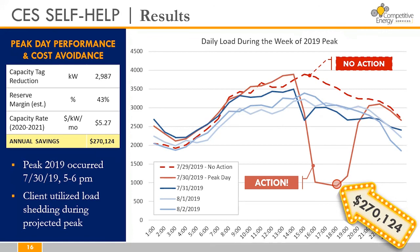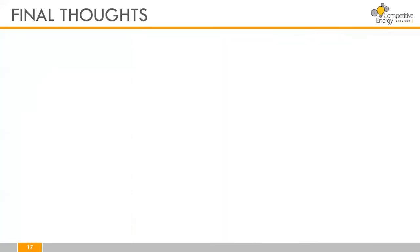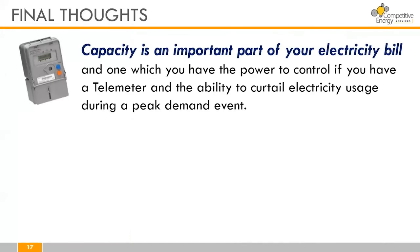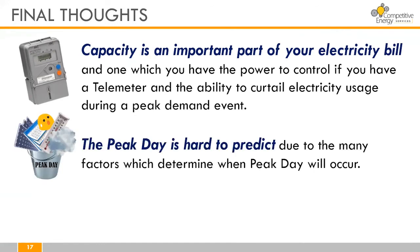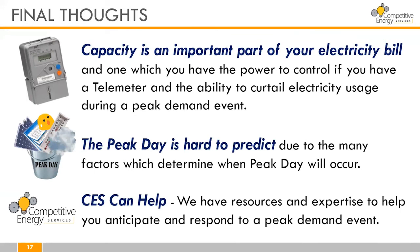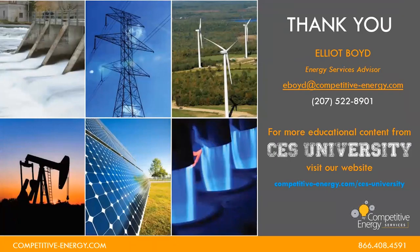Here are some key takeaways from our presentation today. First, capacity is an important part of your electricity bill and uniquely it's one you have the power to control if you have a telemeter and the ability to curtail electricity during a peak demand event. Second, the peak day is hard to predict due to the many factors — that bucket of variables we talked about. And third, CES can help — we have the resources and expertise to help you anticipate and respond to a peak demand event. Thank you for joining us today. Welcome to subscribe to our YouTube channel and follow us on social media for more CES University resources. My name is Elliot Boyd — if you have any questions or comments feel free to reach out to me directly. Stay safe and have a great summer.